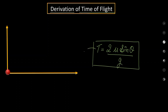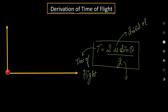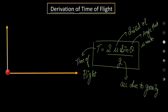First of all, we will understand what this formula stands for. In this formula, t is basically time of flight, u is the initial velocity, g is the acceleration due to gravity, and theta is the angle that u makes with the horizontal.